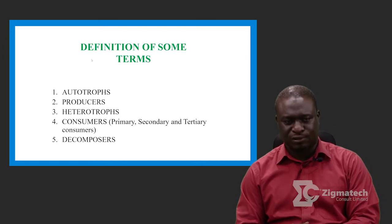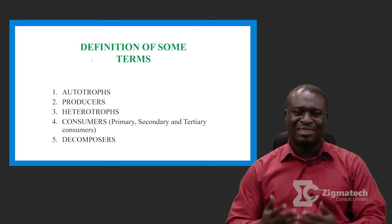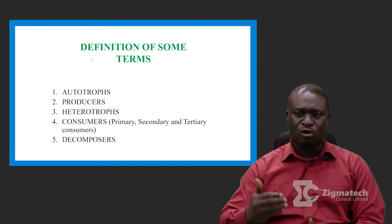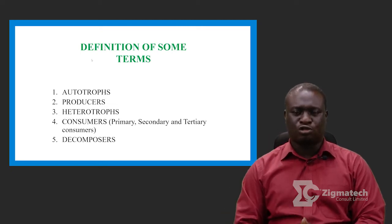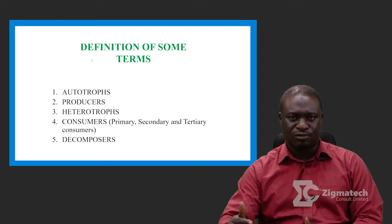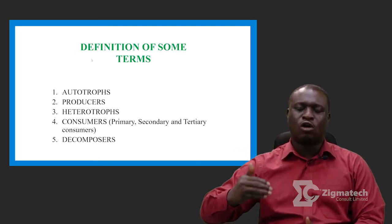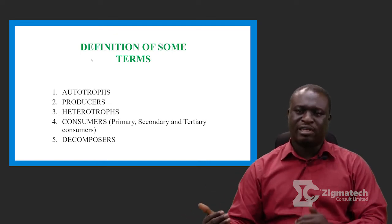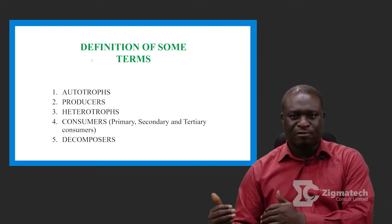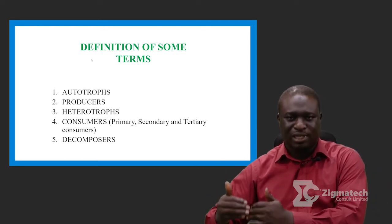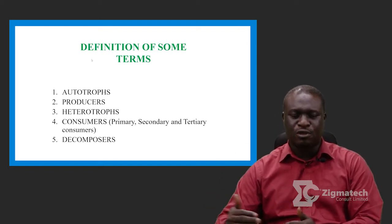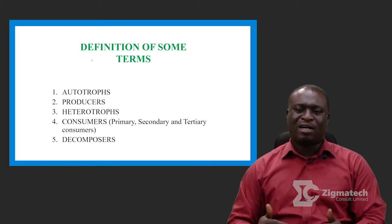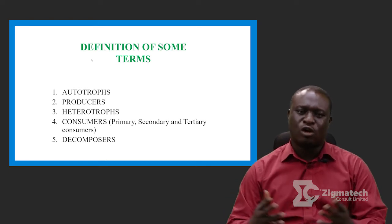Number three is heterotrophs. Heterotrophs are simply organisms that cannot manufacture their own food; they depend on other organisms for food. Just as with autotrophs, there is also what we call heterotrophy. The difference is that heterotrophy is the process by which living organisms obtain food, while heterotrophs are those living organisms that depend on others for food. From heterotrophs, we also have what we call consumers.